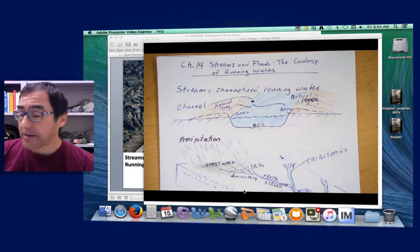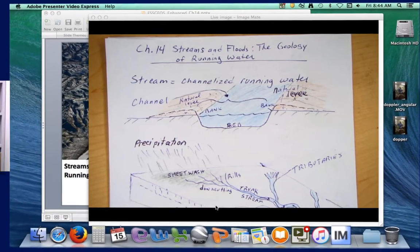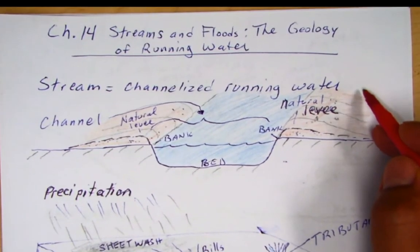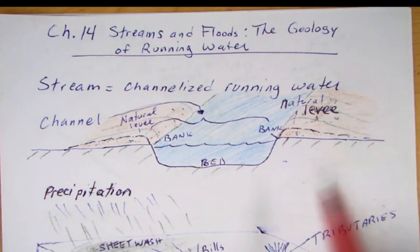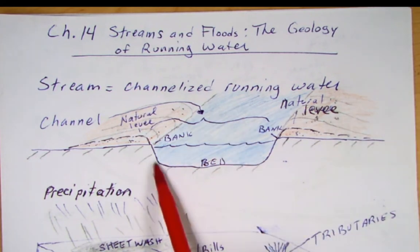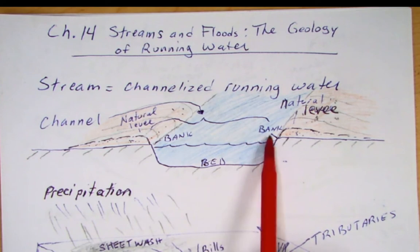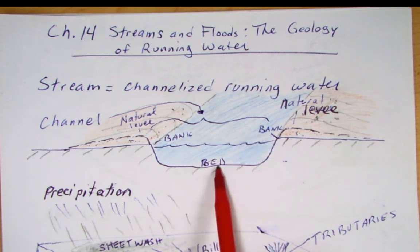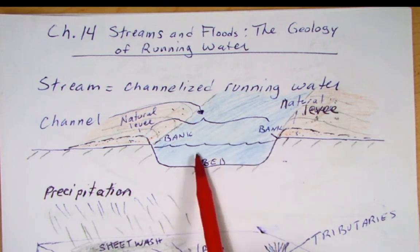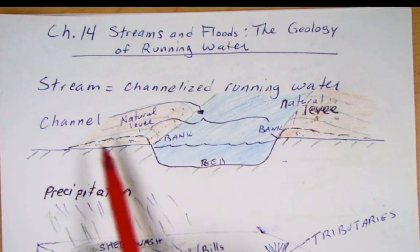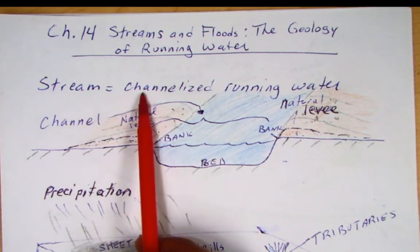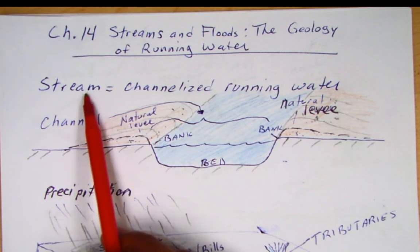Hello and welcome back to Geology. I'm Robert Lopez and today I want to talk about streams and floods. A stream is channelized running water. There are banks on the side of the channel, the stream bed, and water flowing in the channel. To a geologist, any channelized body of water that's running is called a stream — so rivers, brooks, and creeks are all called streams.